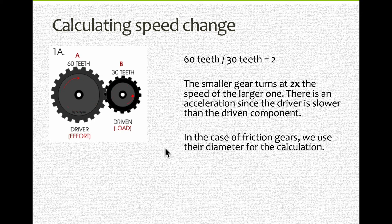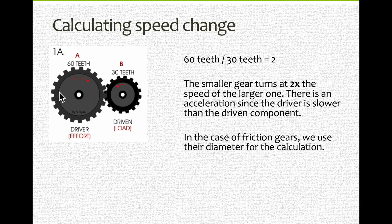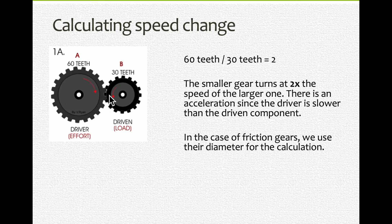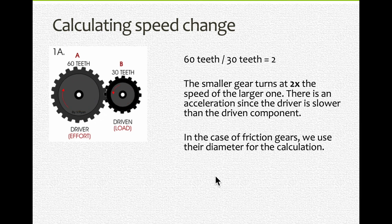In the case of friction gears, we don't have teeth, so we can't count them. We use the diameter for the calculation instead — for example, a certain number of centimeters divided by another number of centimeters — and we get a factor and do the same analysis.